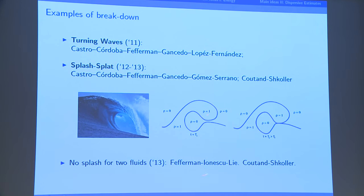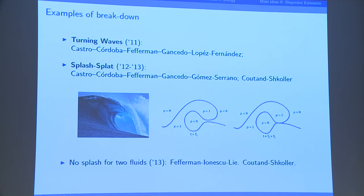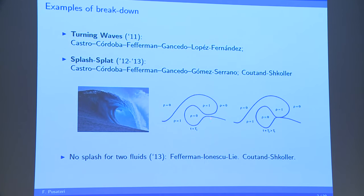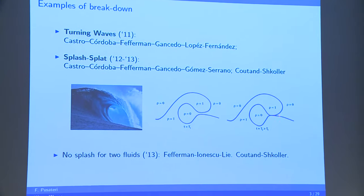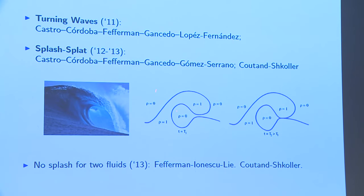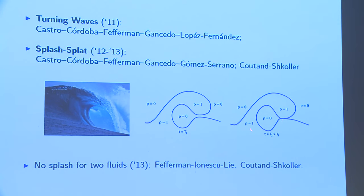There's a touching point, but the interface as a parameterized curve remains smooth. What is large is the inverse of the distance. If you had another fluid inside, such touching in the smooth category of parameterized curves cannot happen — and this was proved by Fefferman, Ionescu, and Lie and Kunze-Schäler. This is an example of some type of breakdown of the equation.